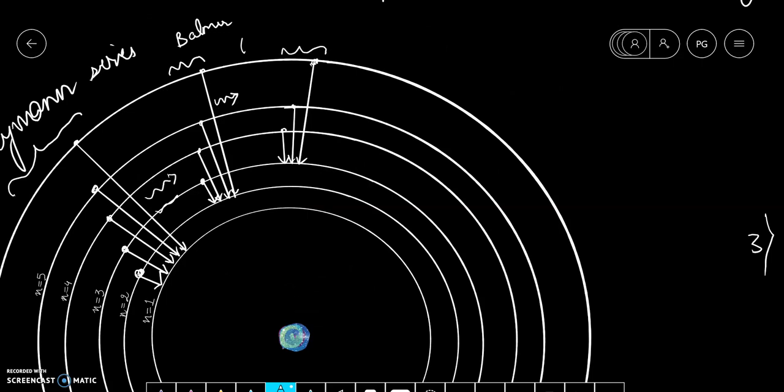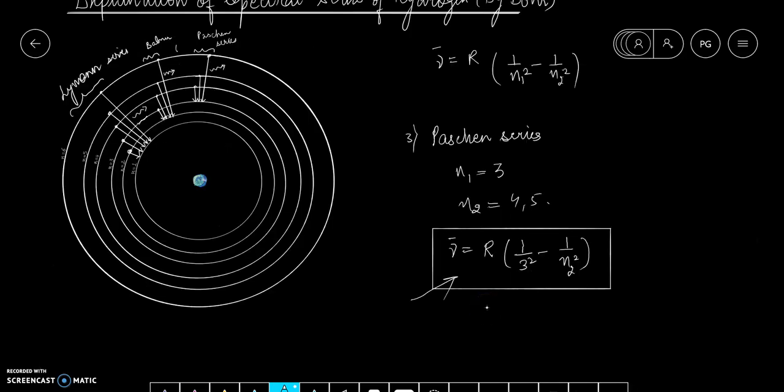The spectra from these transitions correspond to Paschen series and the photons thus radiated belong to the infrared region. The corresponding wave number of those photons will be given by this formula.